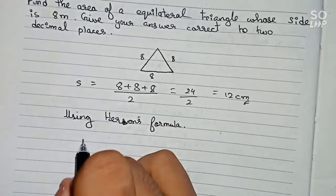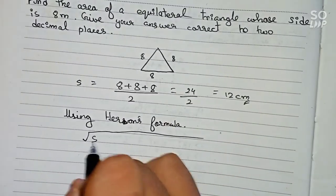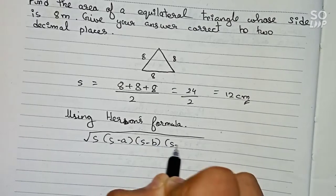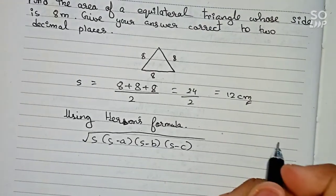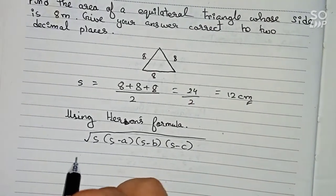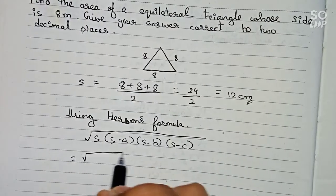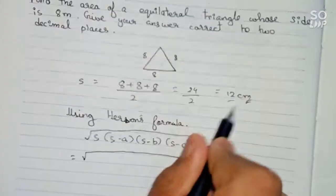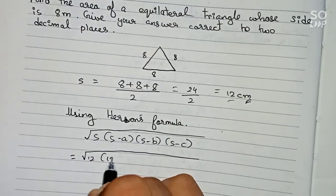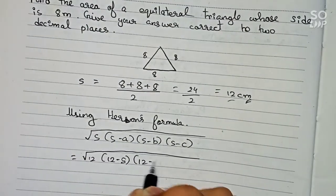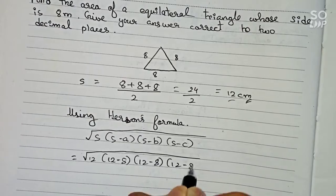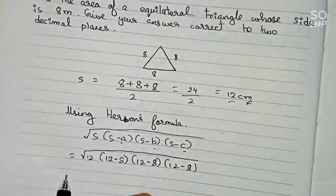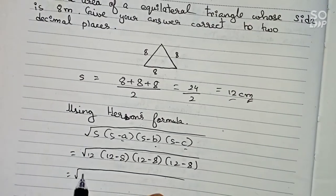Heron's formula says that the area of the triangle equals the square root of s times (s minus a) multiplied by (s minus b) multiplied by (s minus c). Now I put in the values. s is 12, so it becomes: 12 minus 8, times 12 minus 8, times 12 minus 8. Here a, b, and c are all three sides equal to 8.